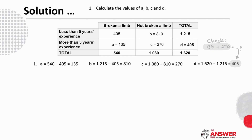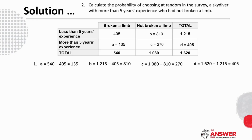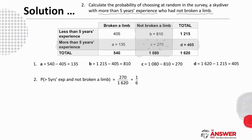Question 2 asked us to calculate the probability of choosing, at random in the survey, a skydiver with more than 5 years' experience who had not broken a limb. We go to the table and see where these two conditions meet. Our numerator is 270, and since we are choosing at random from all the skydivers, our denominator is 1620. This fraction simplifies to a sixth.